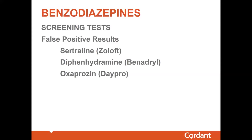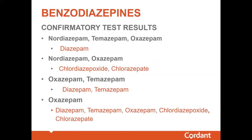This slide depicts confirmatory test results. If confirmatory testing on a urine specimen comes back positive for nordiazepam, temazepam, and oxazepam, the most likely drug causing those three to appear is diazepam. Looking at the benzodiazepine metabolism chart, diazepam is metabolized to nordiazepam, which ultimately results in oxazepam formation. The alternative pathway is temazepam going to oxazepam. So the presence of nordiazepam, temazepam, and oxazepam almost always indicates use of diazepam, or Valium.